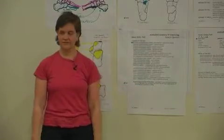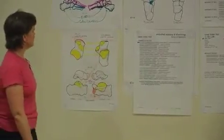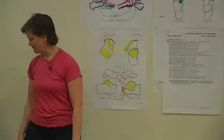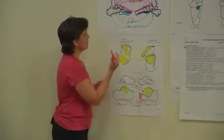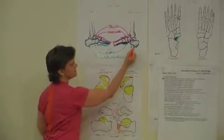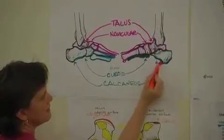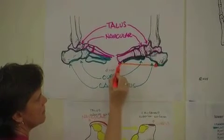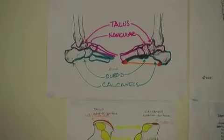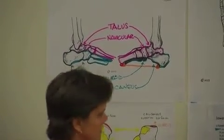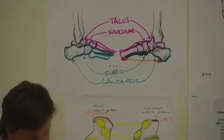So the plantar fascia is this sheet of connective tissue that goes from the front of our heel, attaches in here to the heel, and extends to the base of the metatarsals, and then connectively out into the toes.